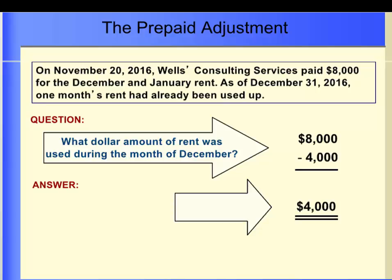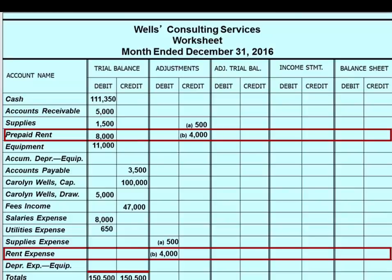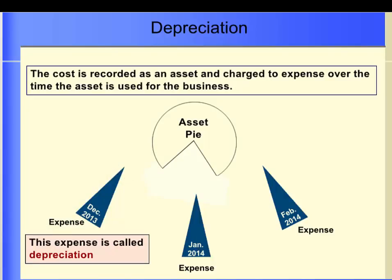Now let's take a look at the adjustment for expired rent. Recall that the company paid for two months' rent in advance. By the end of the month, one month had expired, so we need to reduce the prepaid rent account by the amount for one month's rent. When we originally paid the two months of rent, we debited prepaid rent and credited cash. This means that one month of rent was equal to $4,000. Wells Consulting Services must make an adjustment to show that $4,000 of the prepaid rent has expired. We will debit the rent expense account by $4,000 and credit the prepaid rent account by $4,000. Here is how we enter the adjustment in the worksheet — notice the letter B has been placed next to both the debit and the credit.